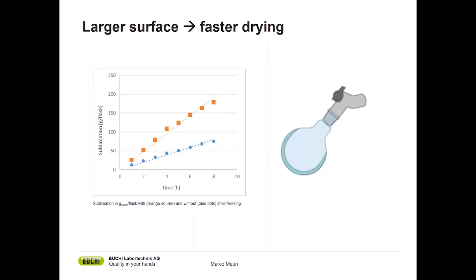If you look at the graph on the left hand side, we have the orange squares, which is a flask that's been frozen in a freezer by standing there, and we have the blue dots that have been used with... sorry, I mixed it up. It's exactly the other way around. The blue dots are frozen in a conventional way, just standing in the freezer, and the orange squares are frozen by rotational freezing. If we compare the two, we can see that shell freezing has a sublimation rate that is at least twice the sublimation rate of the conventional freezing method. This is very impressive and will allow you to freeze dry your sample much faster than if you would use conventional freezing just in a freezer.